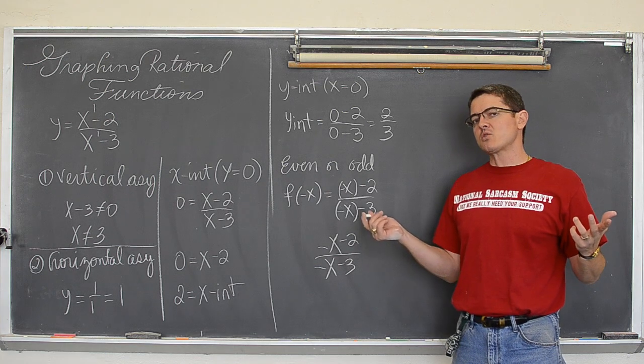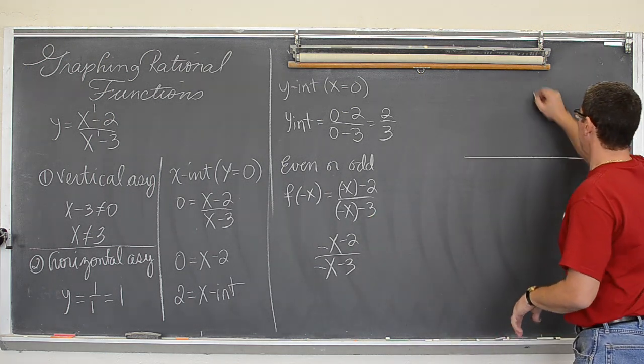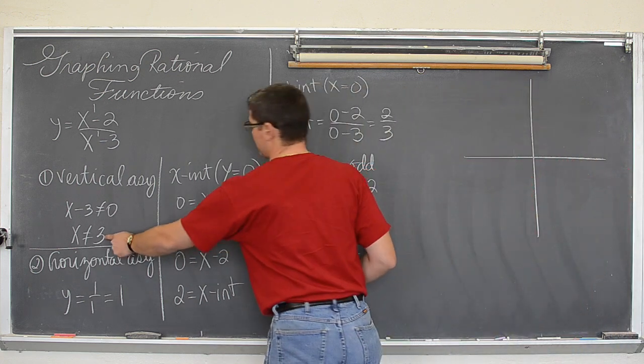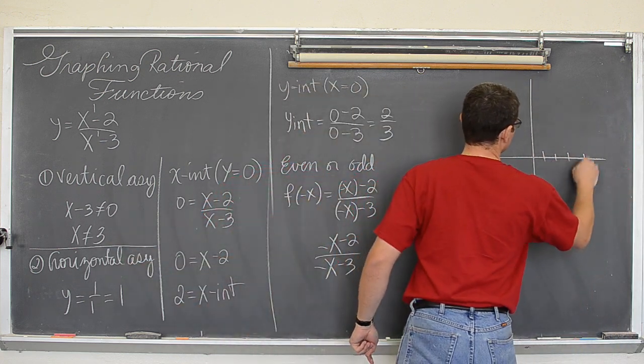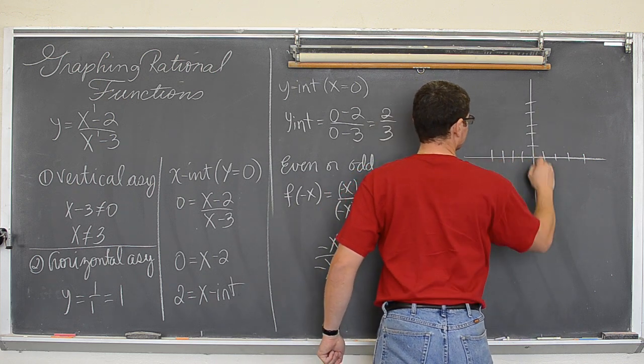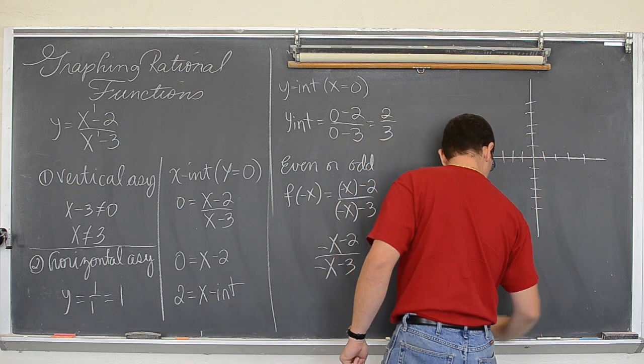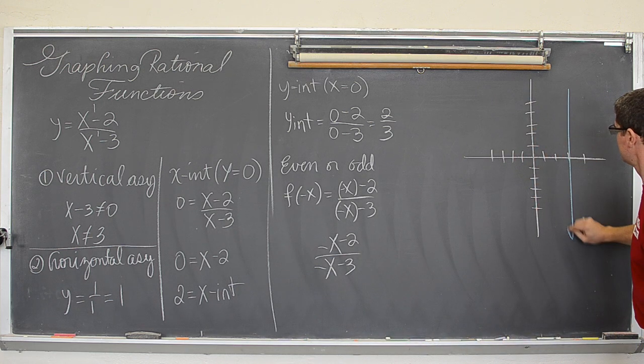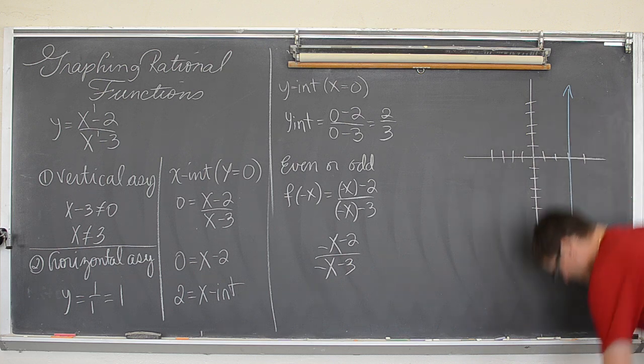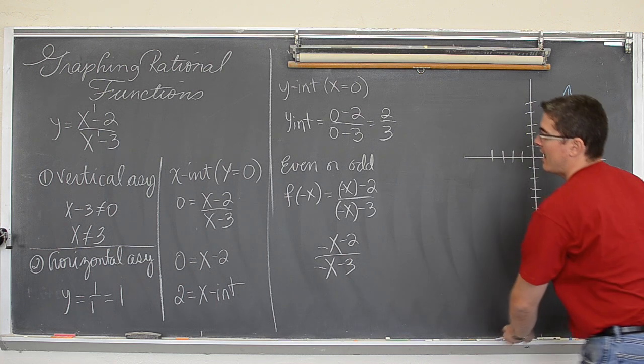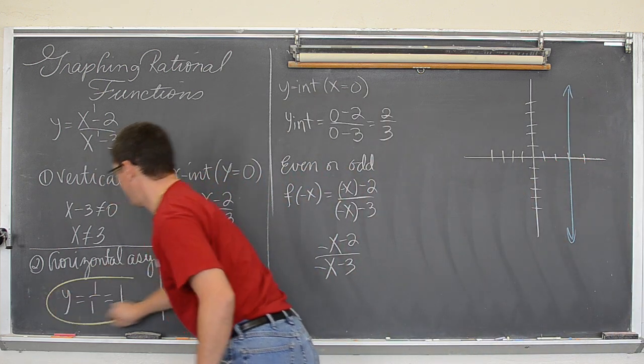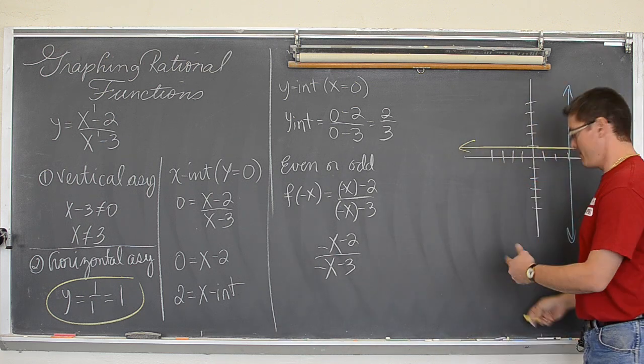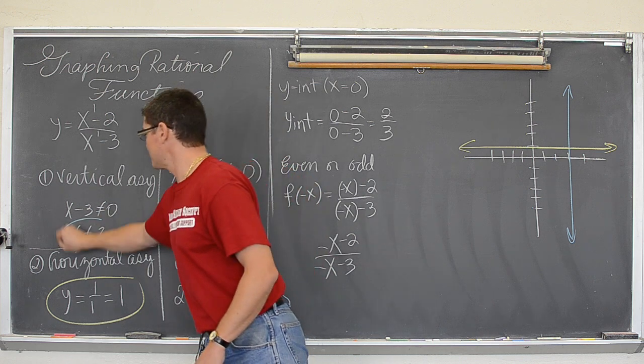So I think we are ready to try and draw a picture. So we have a graph with a vertical asymptote at 3. So we have a vertical asymptote at x equals 3. We have a horizontal asymptote at y equals 1. And the blue and yellow again are the asymptotes.